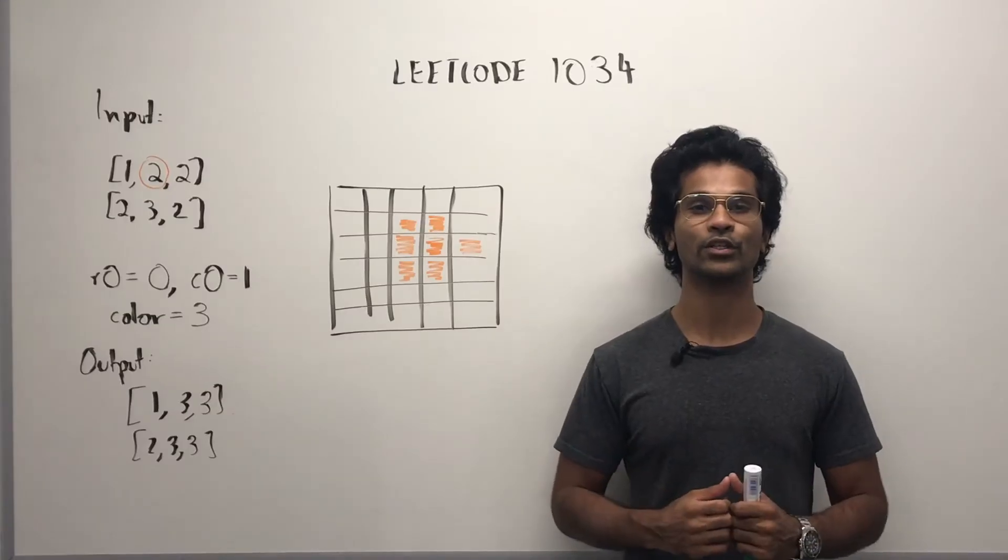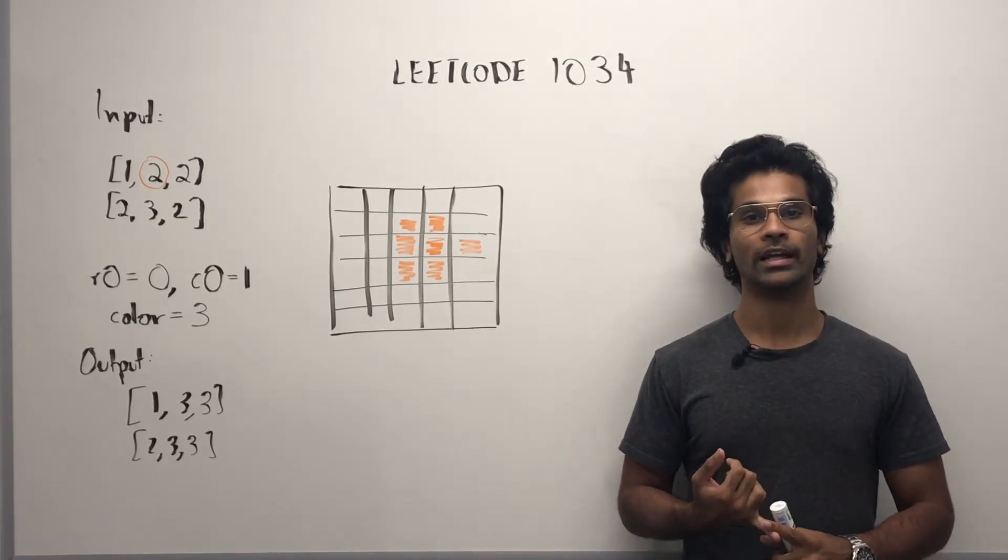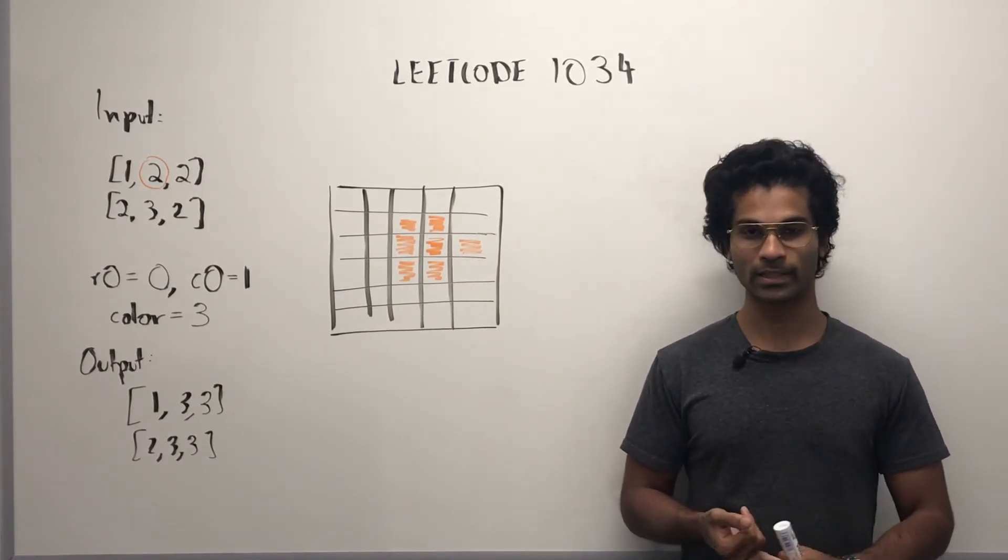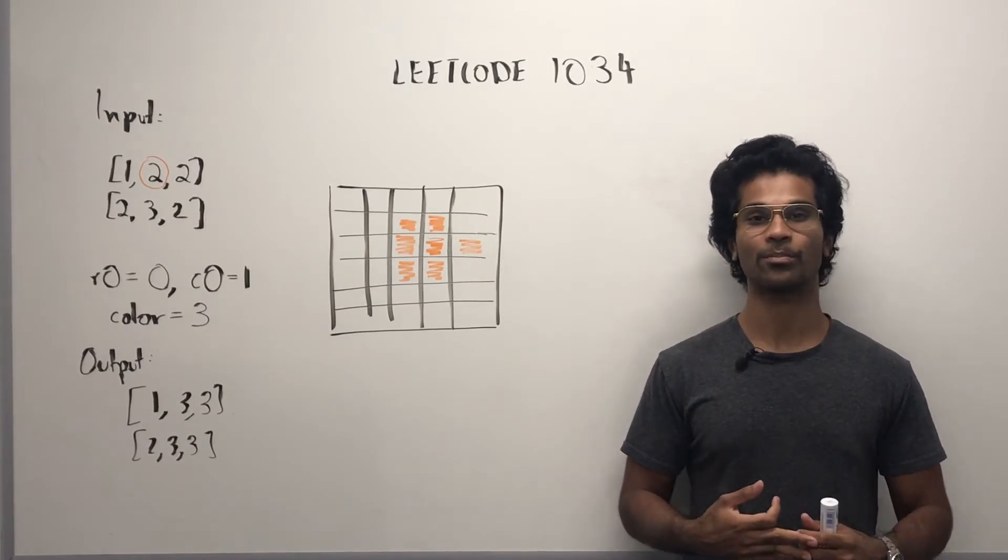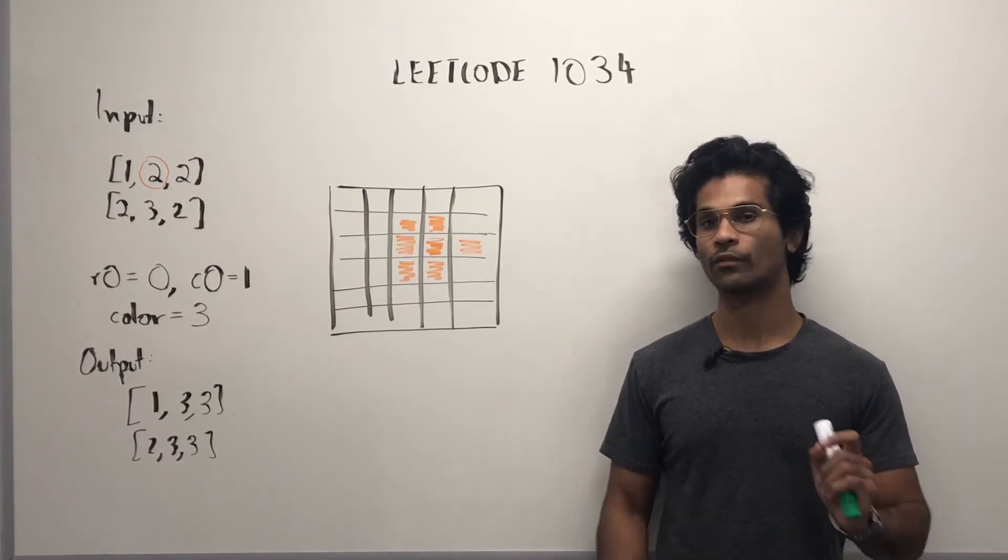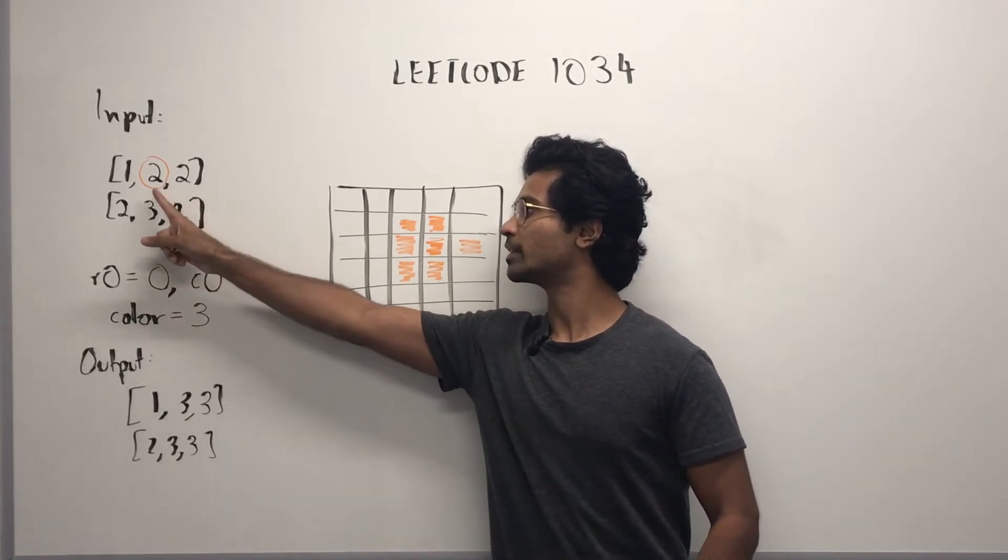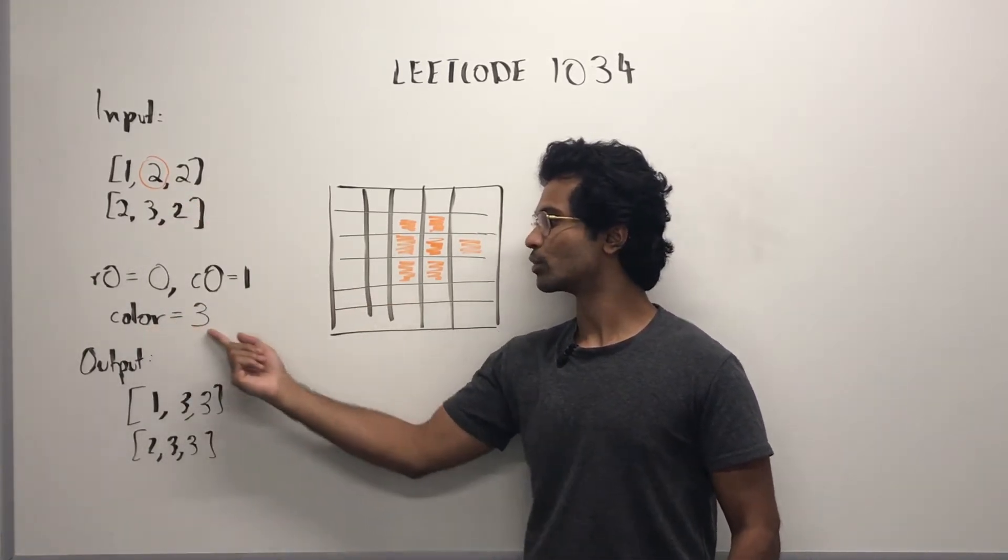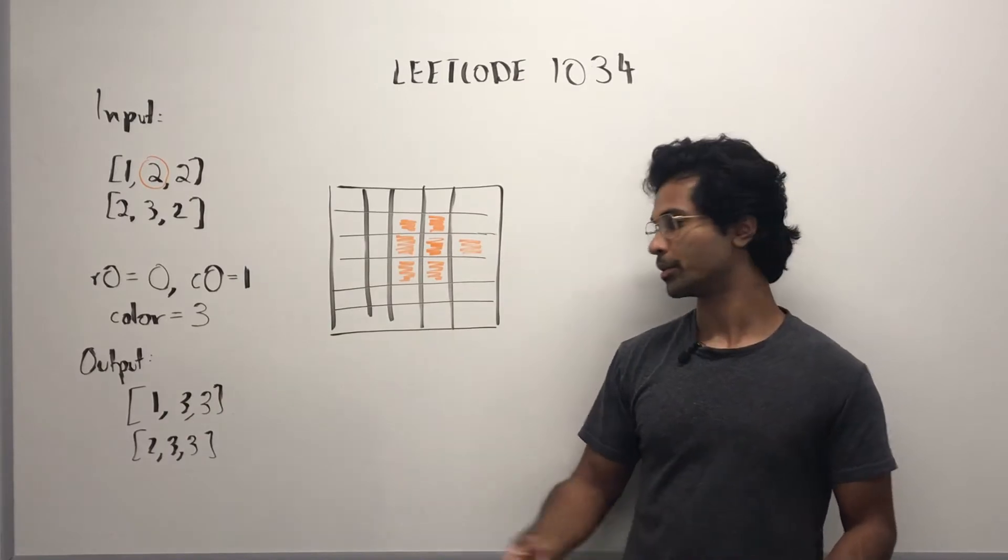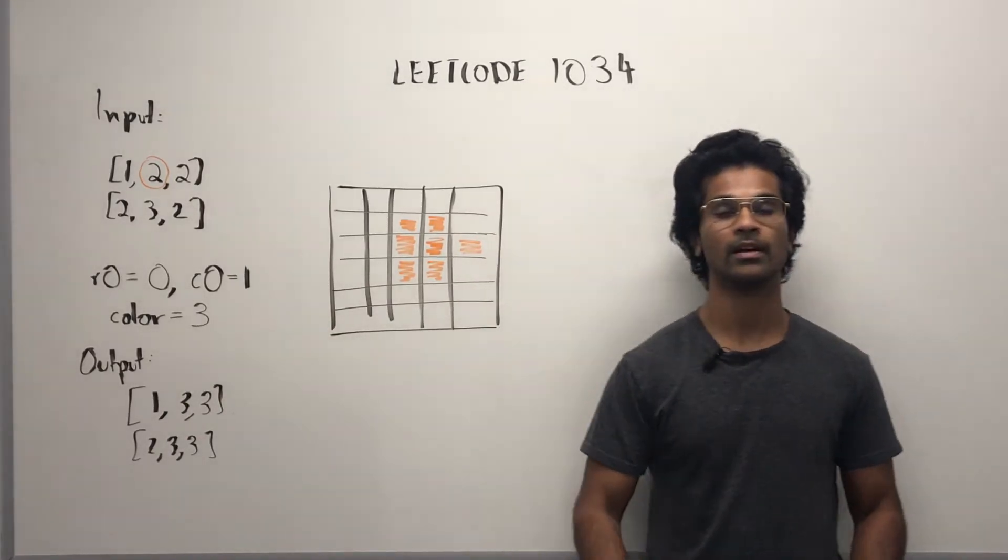The input is going to be a 2D integer array, integers that represent a coordinate, and an integer that represents a color. So, if our input is this, and we have the coordinate targeting this point, and the color is 3, we have an output of this.